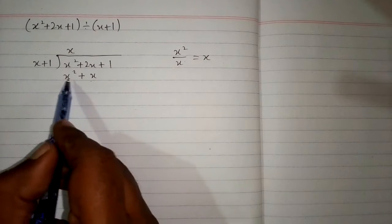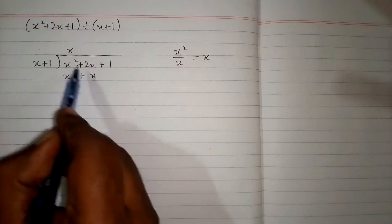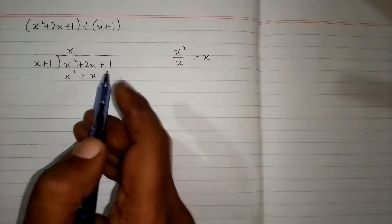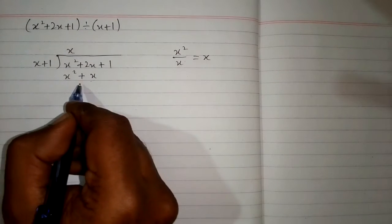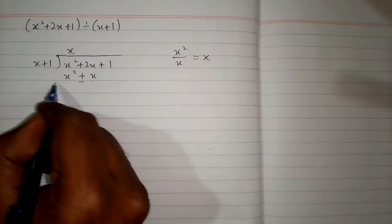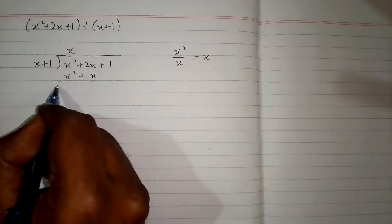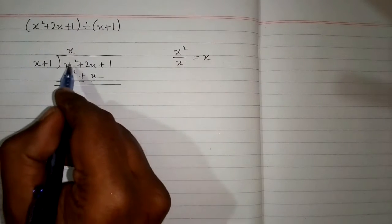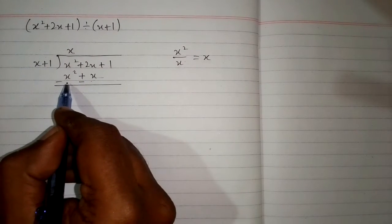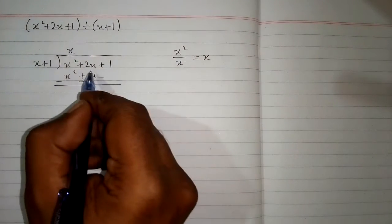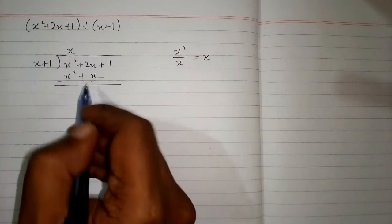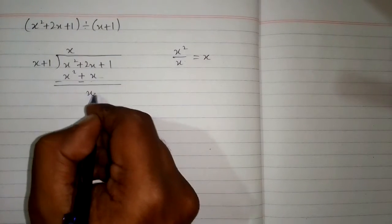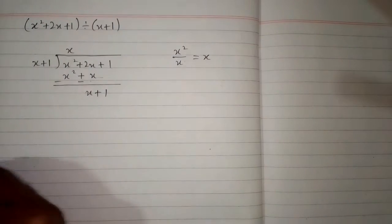Now we will subtract this polynomial from this polynomial. We will change the sign of each term of this polynomial. So x squared minus x squared is 0, and 2x minus x is x, giving us x plus 1.